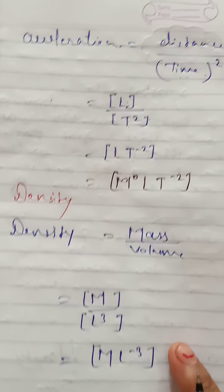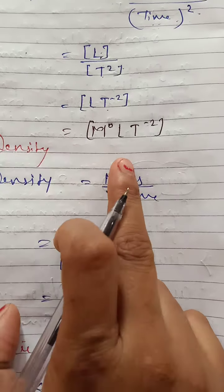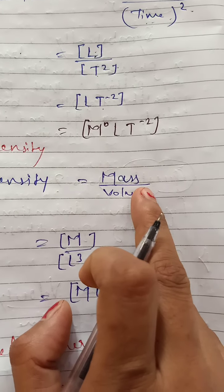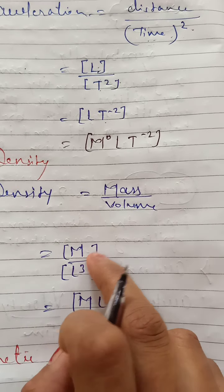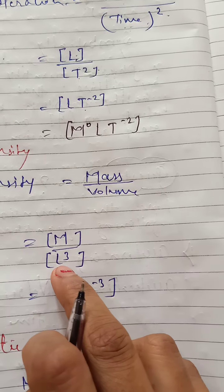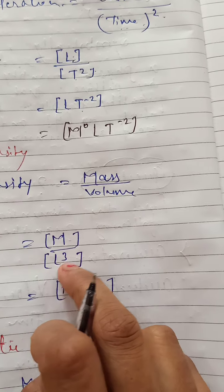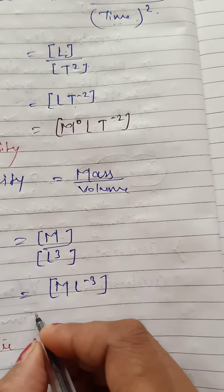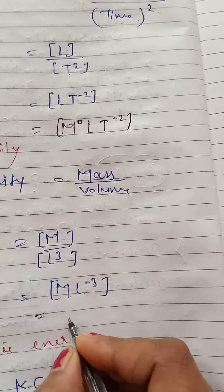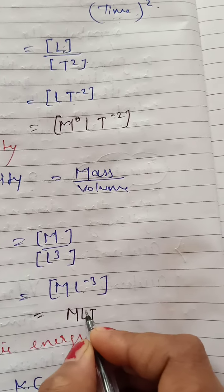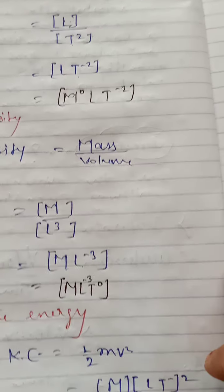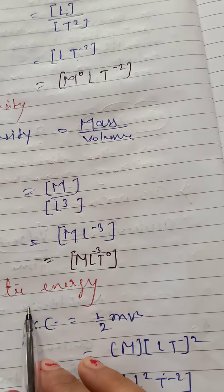And density. Density is mass by volume. So mass is denoted by capital M, volume is denoted by L cube. So here we get M L to the power minus 3 T to the power 0.